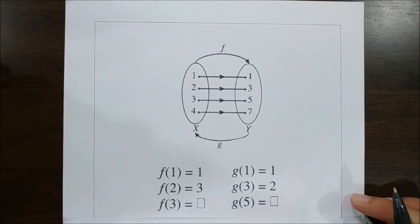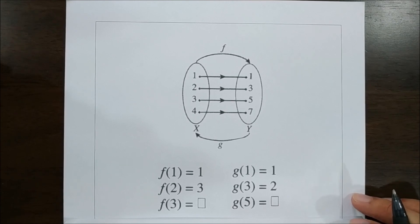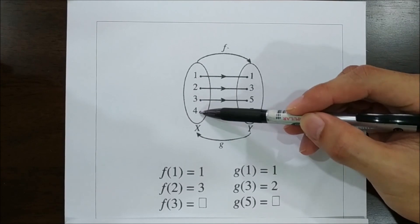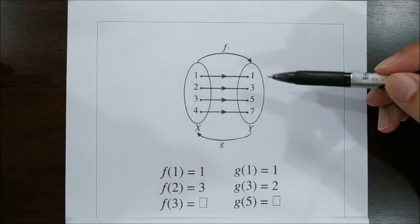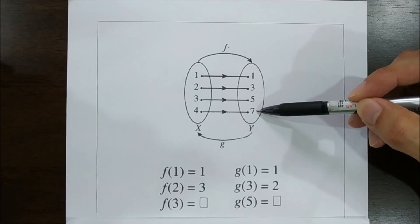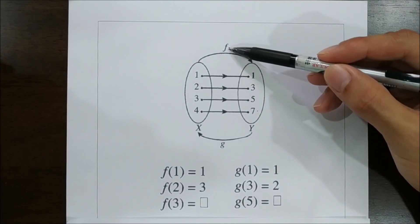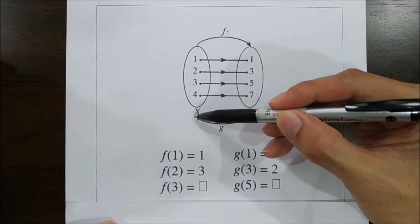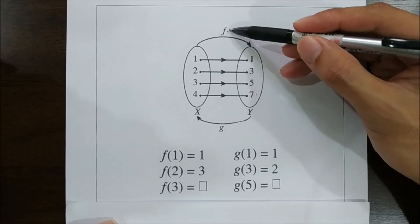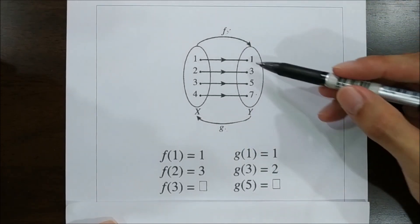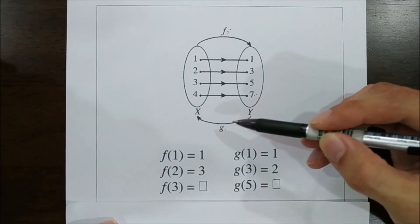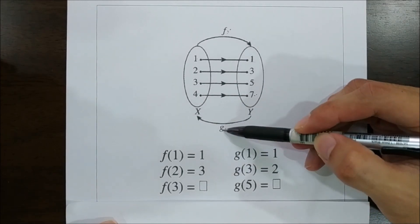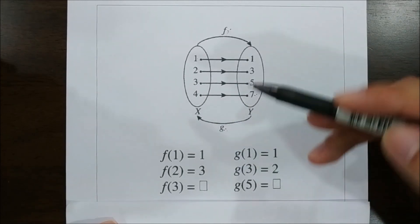Now we go to Activity 2, related to Conjecture 2. We are given a function f where 1, 2, 3, 4 are the objects and 1, 3, 5, 7 are the images. g is the inverse of f — since the arrows point from y to x, it is the inverse. So 1, 3, 5, 7 are the objects of g, and 1, 2, 3, 4 are the images of g.